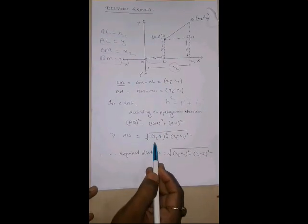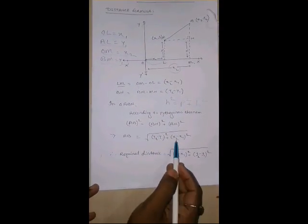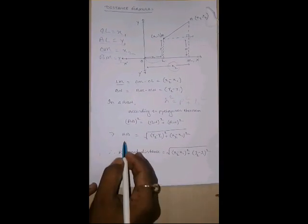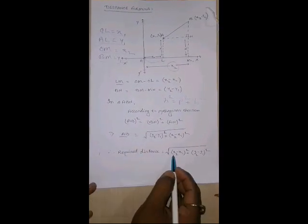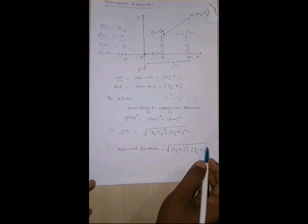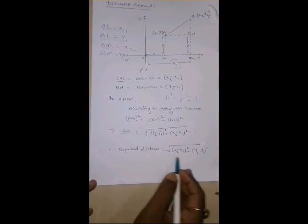Now, we know the value of BN and the value of AN. And if I will remove this square, a square root will come. So, what is the formula of AB? It is x2 minus x1 whole square plus y2 minus y1 whole square. This is the required distance formula.